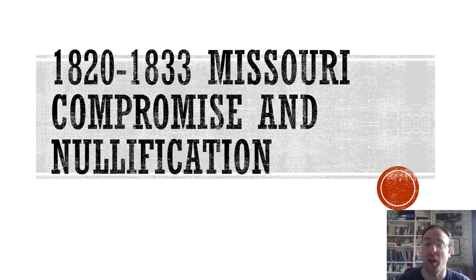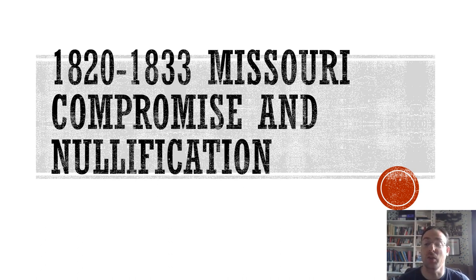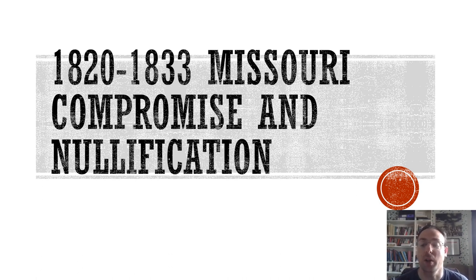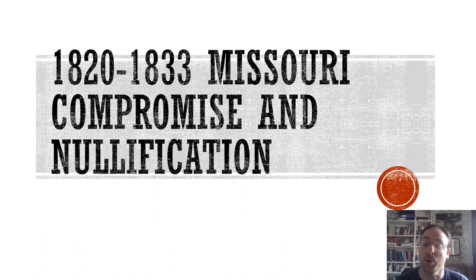Hello everybody and welcome to a video looking at the Missouri Compromise of 1820 and the Nullification Crisis that runs up until 1833. What we're doing is building a picture of the very beginning of the divisions between the North and the South that are ultimately going to lead to the American Civil War. These two events are quite distant from that Civil War but they lay some of the early groundwork, causing early problems or failing to solve them, ultimately leading to the breaking up of the Union.